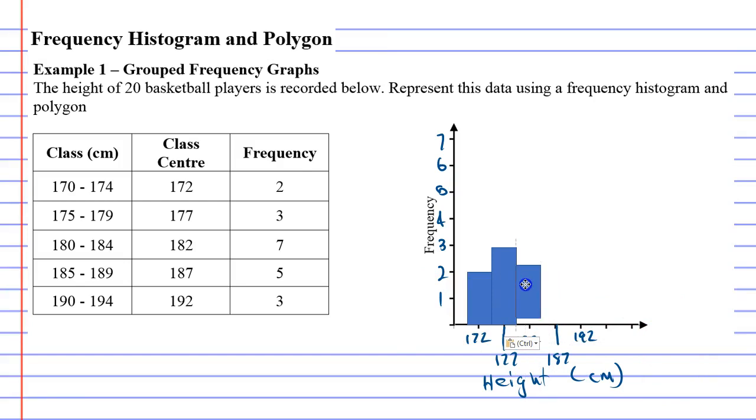182 should have a frequency of 7. And 187 should have a frequency of 5. Ooh, there's a little gap there, but we'll let that slide for now. 192 has a frequency of 3. So there's our frequency histogram drawn.